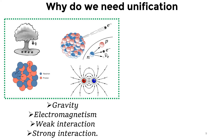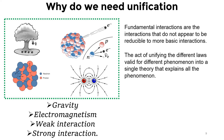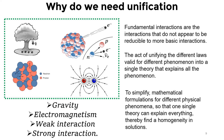Fundamental interactions — gravity, electromagnetism, weak, and strong — are called fundamental because these interactions cannot be further subdivided. The act of unifying the different laws valid for different phenomena into a single theory that will explain everything, and simplifying mathematical formulation for different physical phenomena, gives us one single theory explaining everything — finding a homogeneity, not a heterogeneity, in solutions.